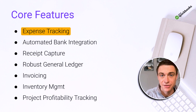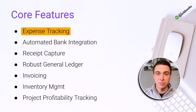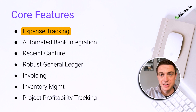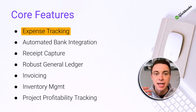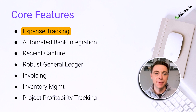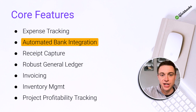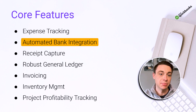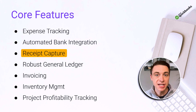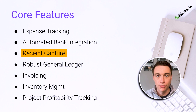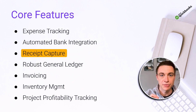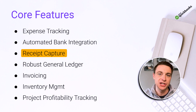Expense tracking is the first core feature. You have expenses coming in — spending on your credit card or bank account — and QuickBooks handles tracking and categorizing those with automated bank integration. All those transactions come into a nice, clean place. There's also a receipt capture functionality, which was new a few years ago. You upload a receipt and it parses out key information from it, saving you tons of time.